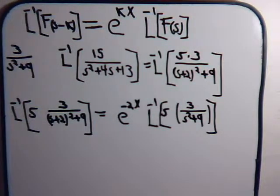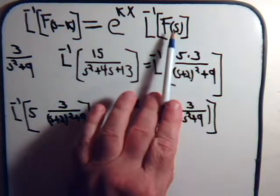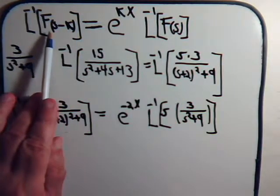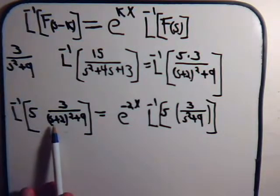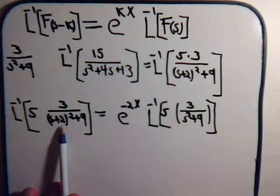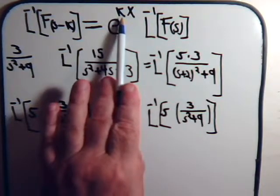So let's look at this again and make certain that we realize what we're doing here. Here we have some function f of s. Here we have some function f of s minus k. s plus 2 squared, that's in s minus k form. k just happens to be minus 2. So if we get rid of that by using this relationship,